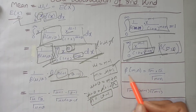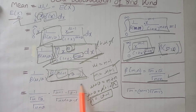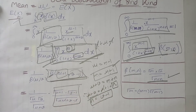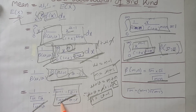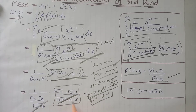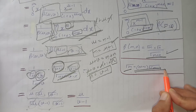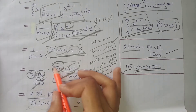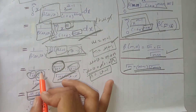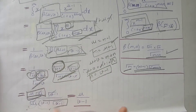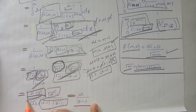We know the beta function can be written in terms of the gamma function, so we substitute that expression here. We can see that certain terms cancel out, leaving only u plus v. We then expand the gamma function: we expand the gamma(u+1) term once and the gamma(v) term once, giving us gamma(v-1) and gamma(u).